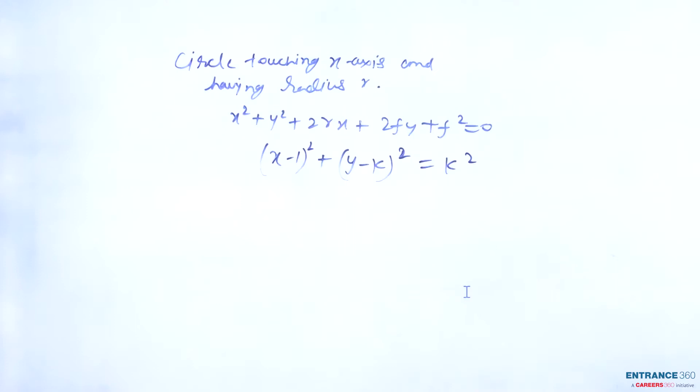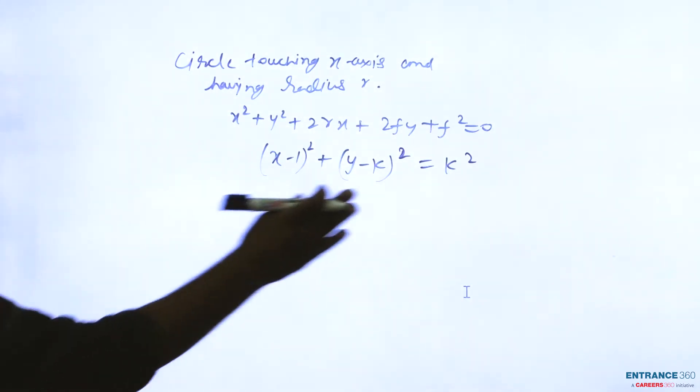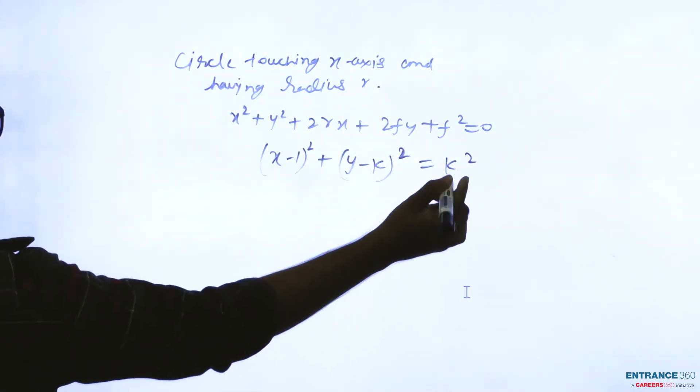This means circle touching x-axis and having radius r. This is the equation of the circle, and k is the radius.